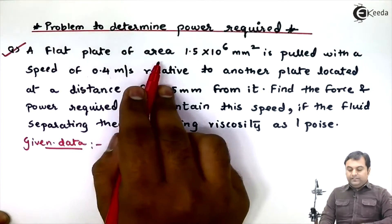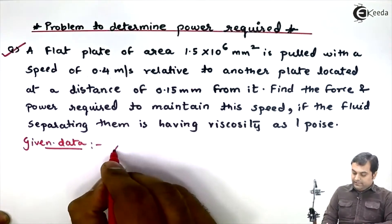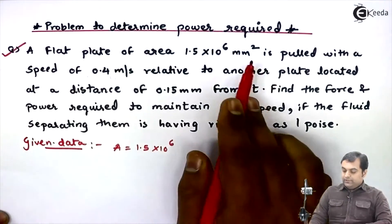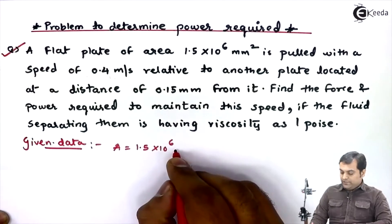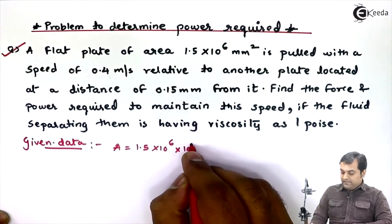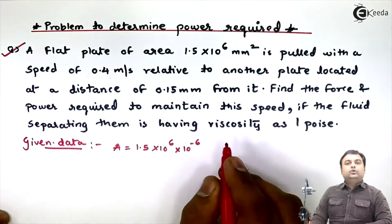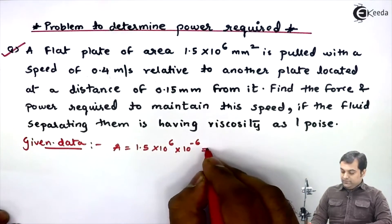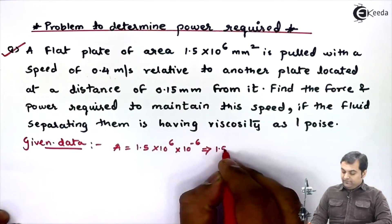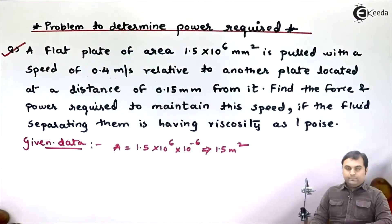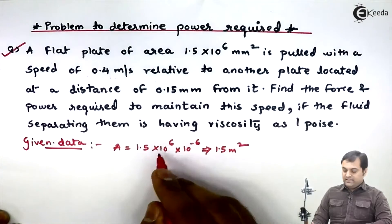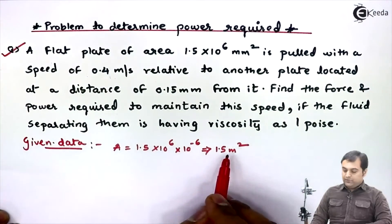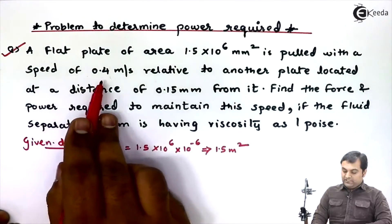I'll write the data. Area A = 1.5×10⁶ mm². I'll multiply by 10⁻⁶ to convert to meter square, so A = 1.5 m², because 10⁶ and 10⁻⁶ cancel out. So I have converted mm² area into m².